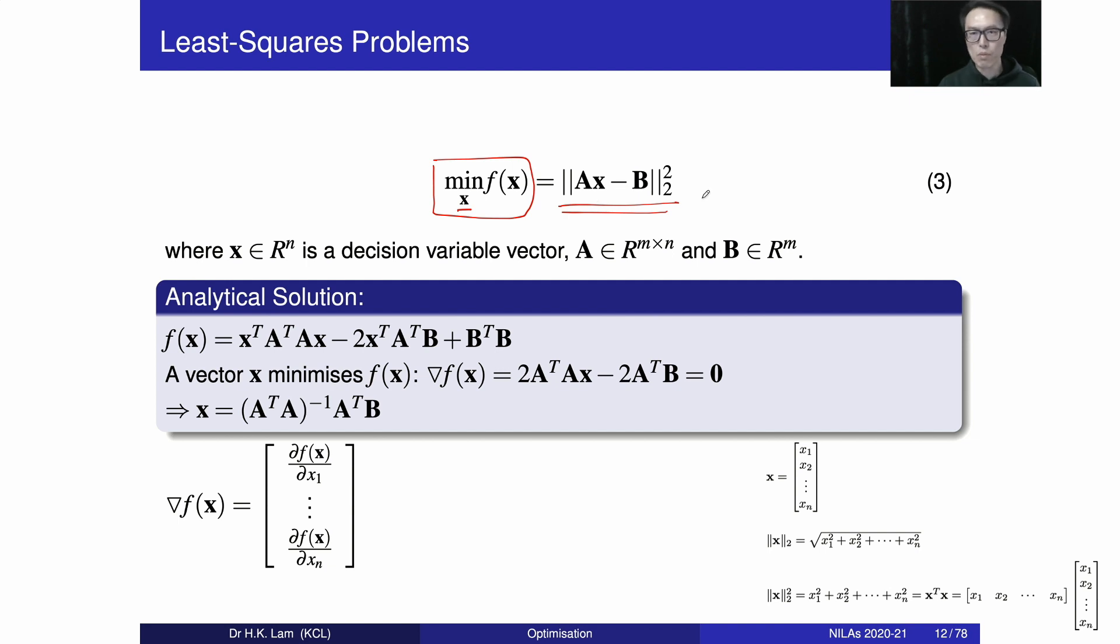So take a look at this. This two in the subscript means that we are going to do the L2 norm of Ax minus b. Take a look at this one. If we have an x with n elements, when we do the L2 norm it means that it is equivalent to the right hand side. Each element of x, the square sum of all the elements squared, take the square root, that is the definition of the L2 norm.